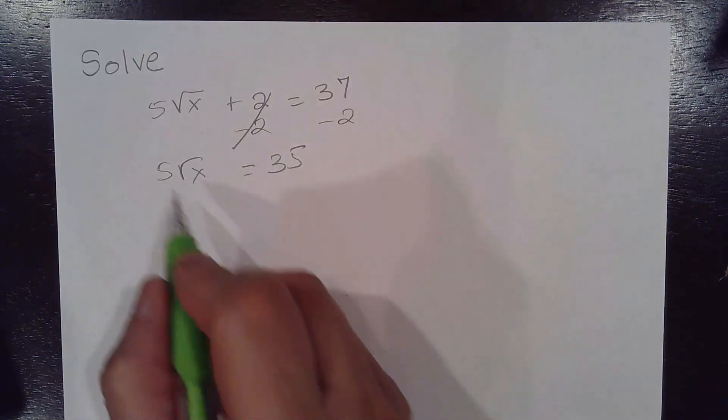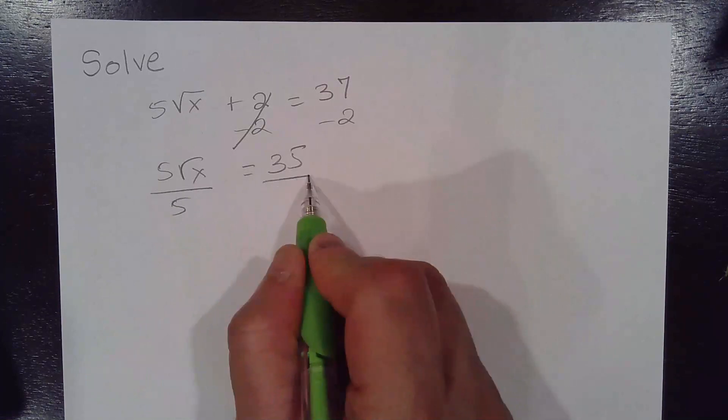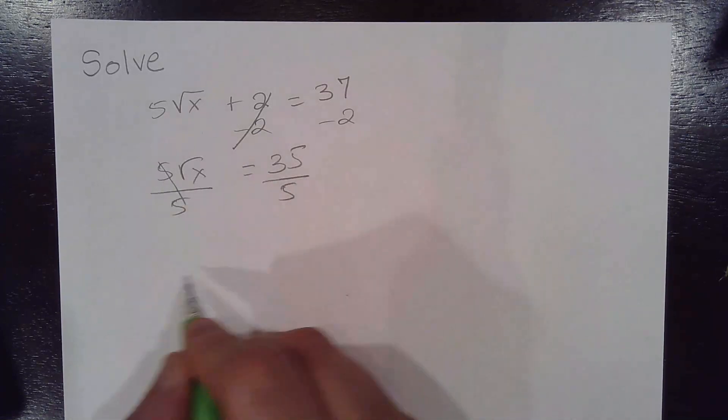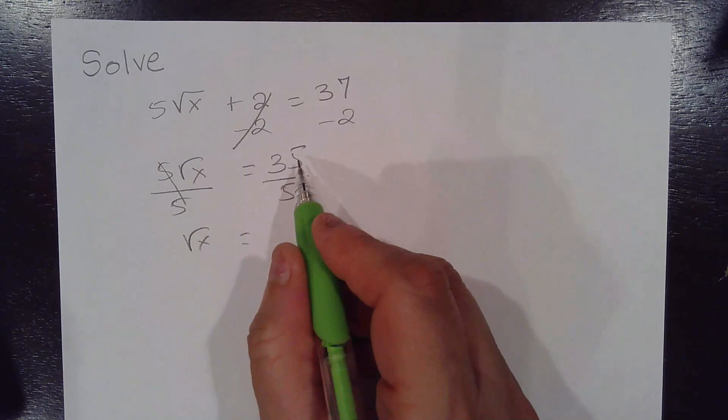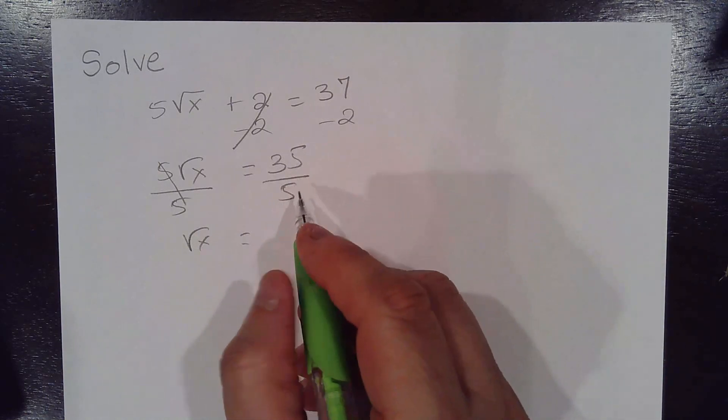Isolating the square root of x, we divide by 5 on both sides of the equation. This cancels and we get square root of x equal to 35 divided by 5 is 7.